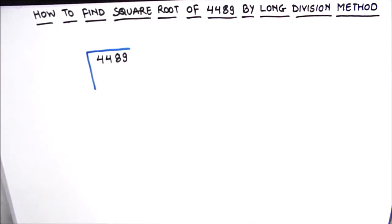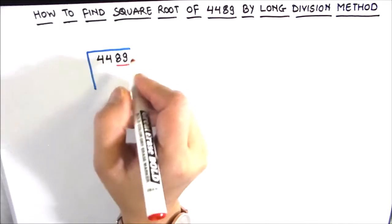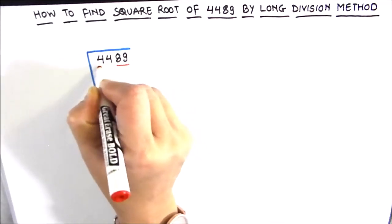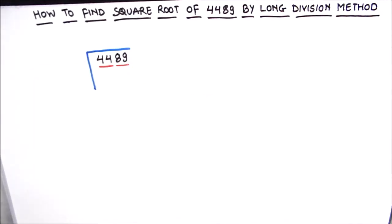Starting from 9, 9 and 8 will become one group, and 4 and 4 will be the other group. So we have two groups: 44 and 89.